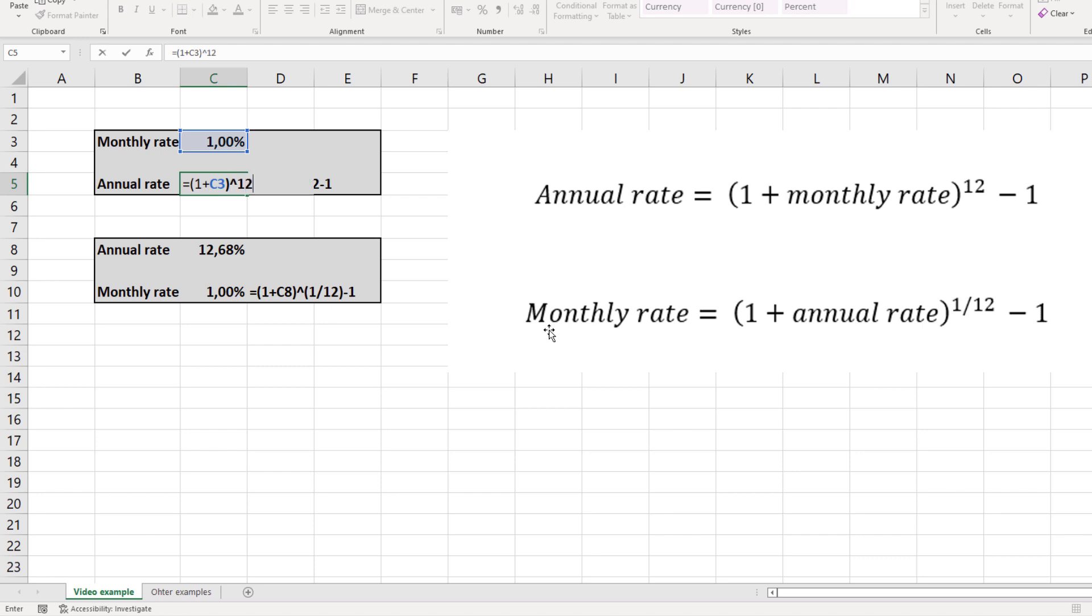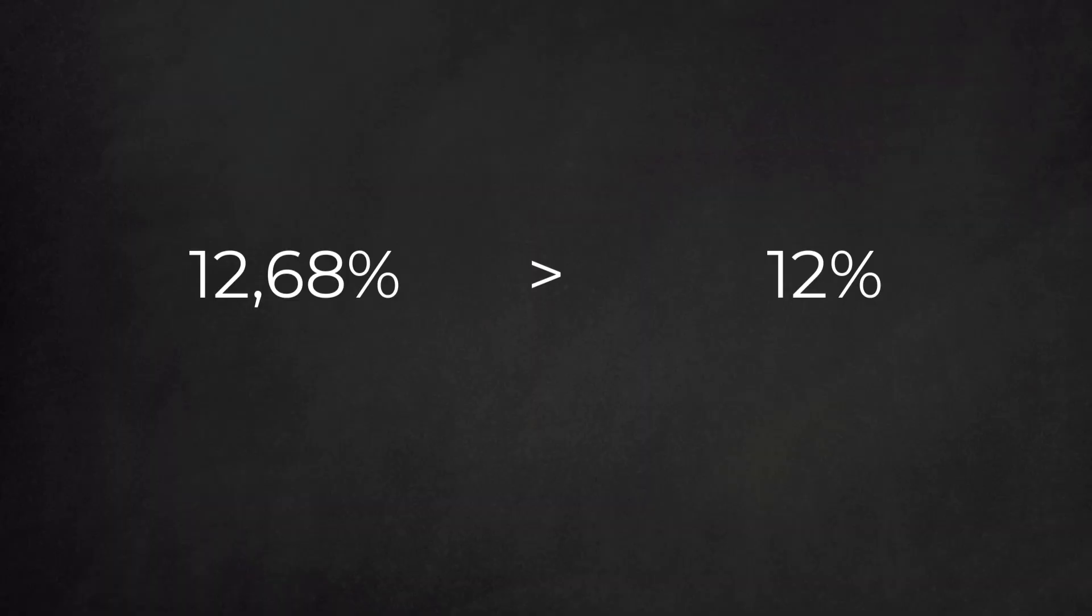Now we have the annual rate. The result is 12.68%, which is higher than the 12% we get by multiplying 1% by 12.